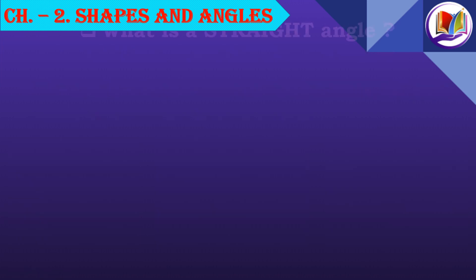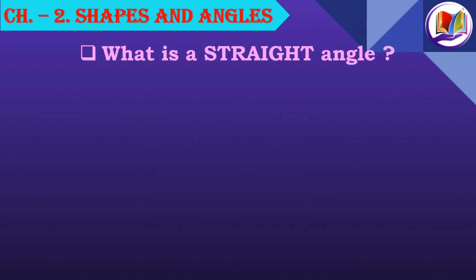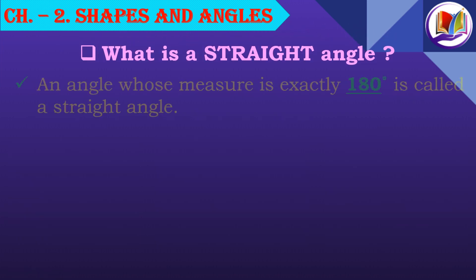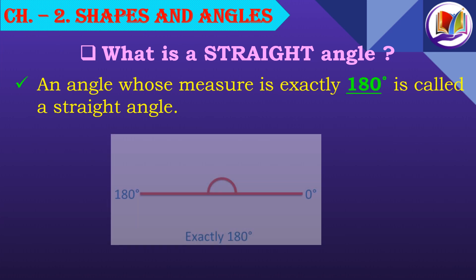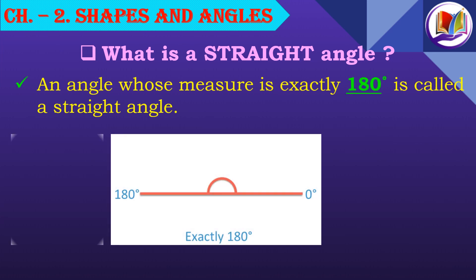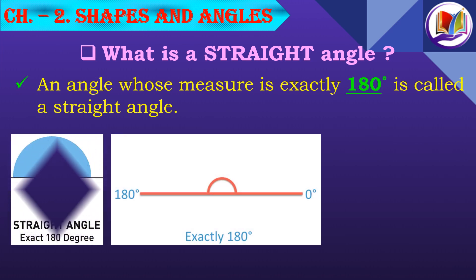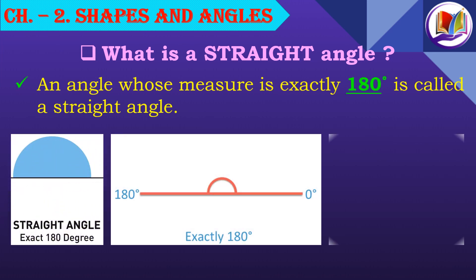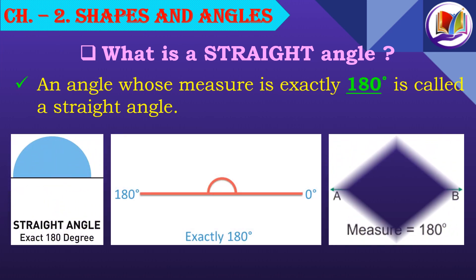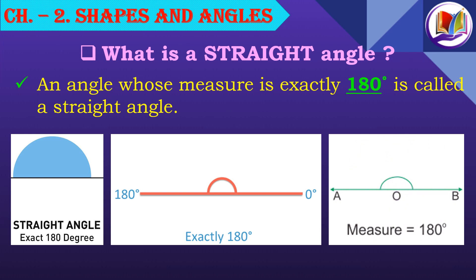What is a straight angle? An angle whose measure is exactly 180 degrees is called a straight angle. It also represents a horizontal line with a vertex marked at the center.